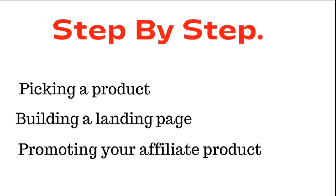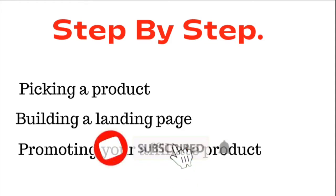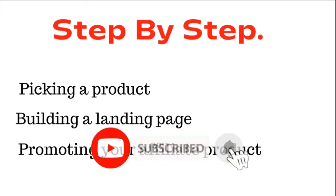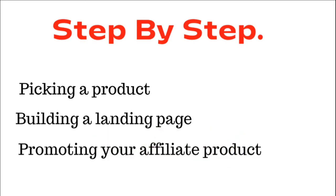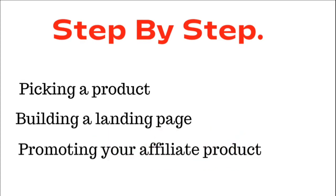We're going to be picking a product from ClickBank — that's step one. Building a landing page is the second step. And then promoting your affiliate product is the third step. I want to make this video simple and straightforward, so let's go straight to it.